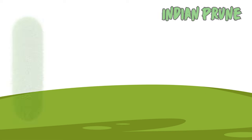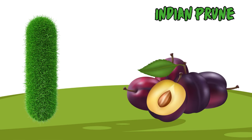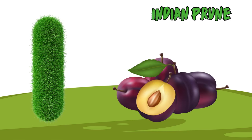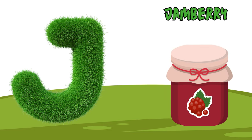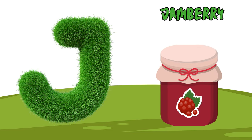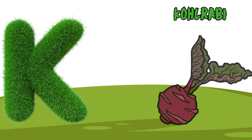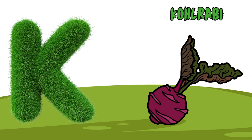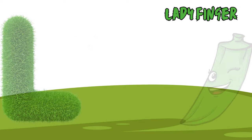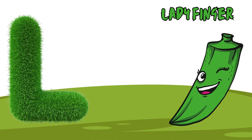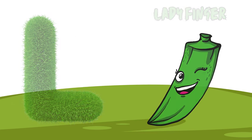I is for Indian prune, Indian prune. J is for jamberry, j-j-jamberry. K is for kohlrabi, k-k-kohlrabi. L is for lady's finger, l-l-lady's finger.